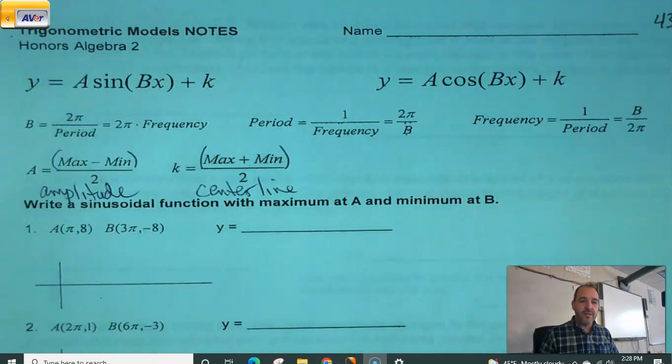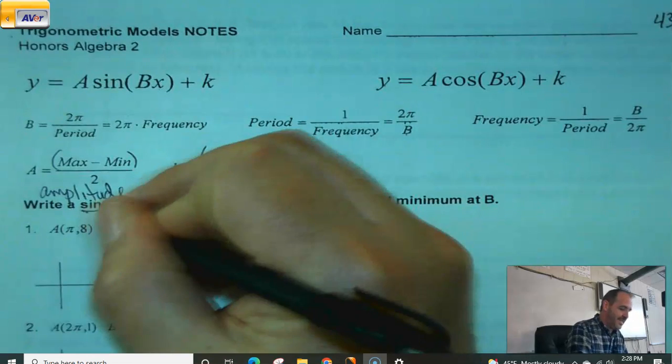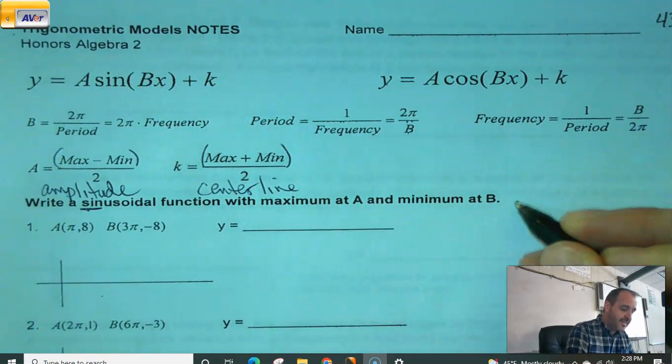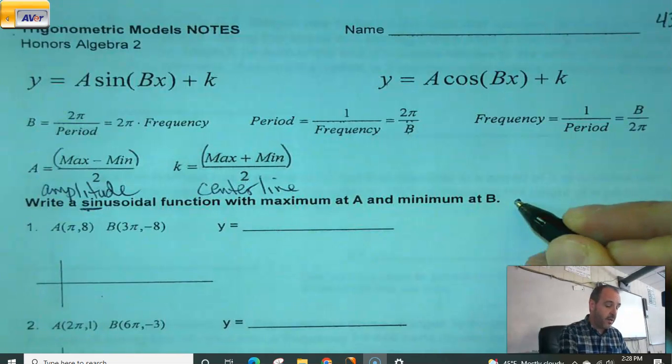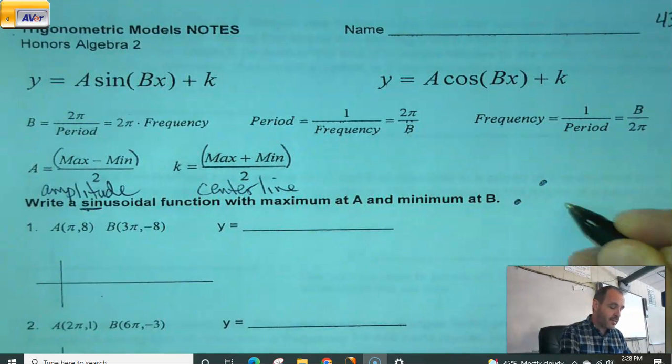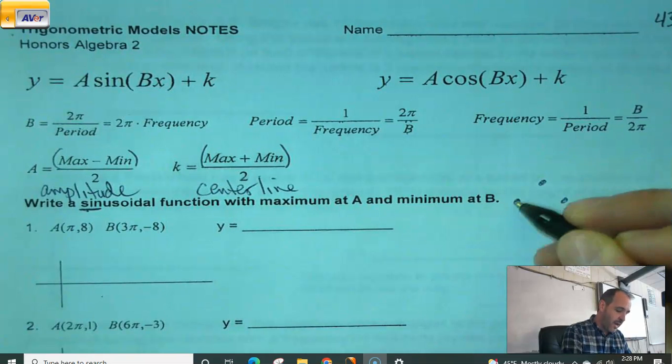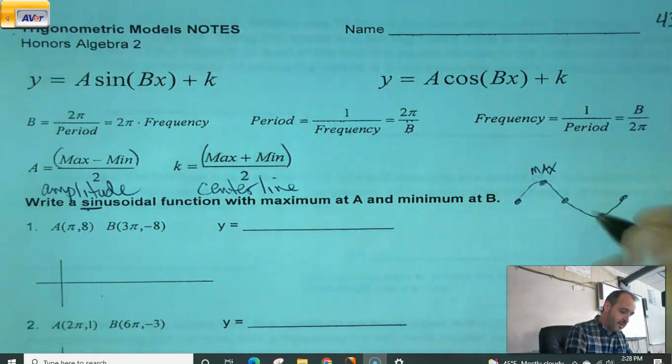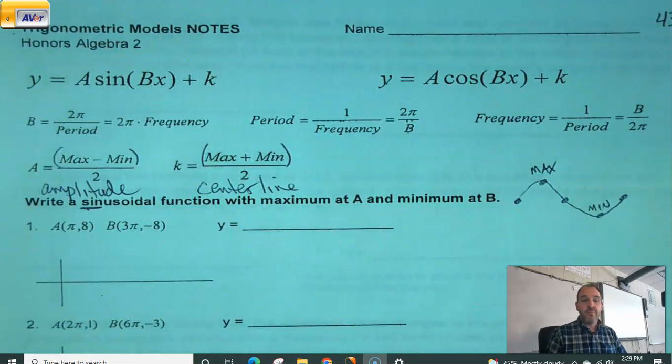So number one. Oh, boy. This looks crazy. Write a sinusoidal function, sine, with maximum at A and minimum at B. A couple things to remember before we even try to get into this. When we're doing sine, typically a sine value starts at 0 or starts at my center line, goes up to the max, comes back to the center, goes down to the min, comes back to the center. Okay. We got our curve here. So here's my max. Here's my min.